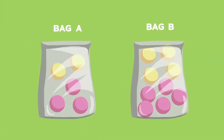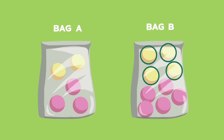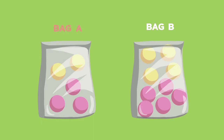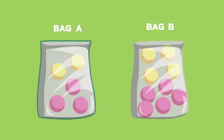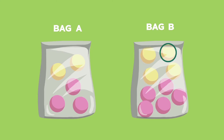Example 1. Two identical bags are filled with balls. Bag A contains three pink and two yellow balls. Bag B contains five pink and four yellow balls. It is equally likely that Bag A or Bag B is chosen. Each ball has an equal chance of being chosen from the bag.